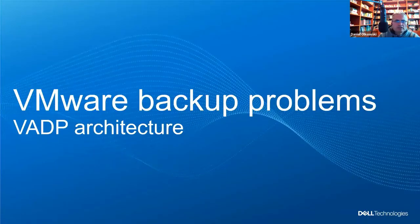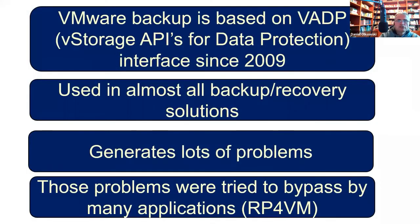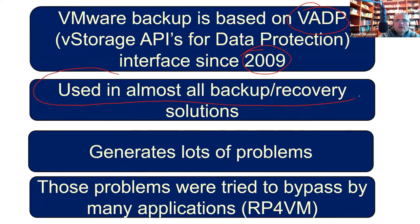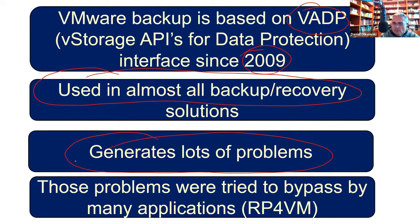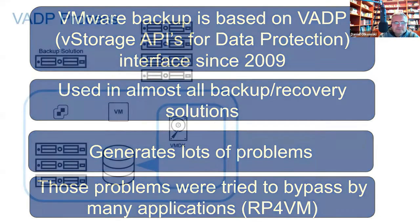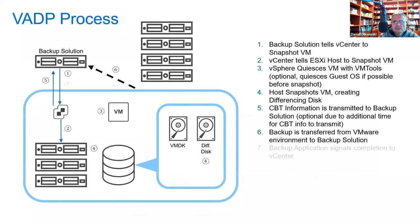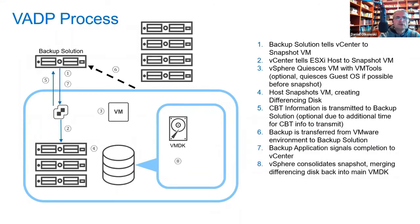The current backup architecture is based on a technology called VADP, introduced in 2009 — quite old technology used in almost all backup and recovery solutions. This technology has a lot of problems. Some solutions try to break away from VADP snapshot technology and backup in a different way, like RecoverPoint for Virtual Machines. The VADP process is not nice for backup and not nice for production.